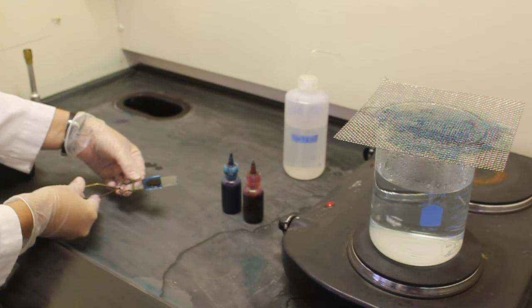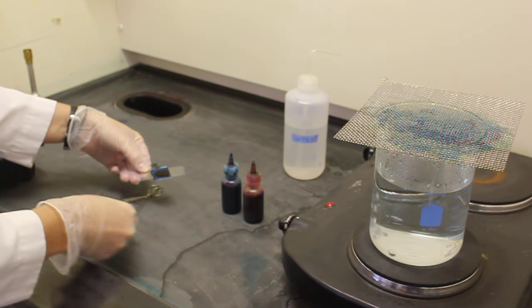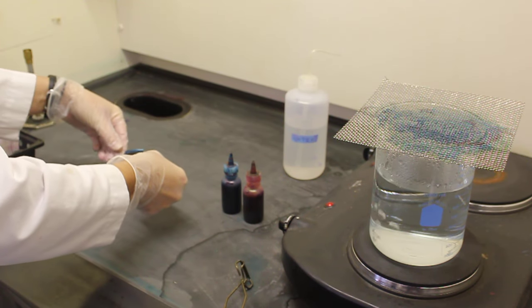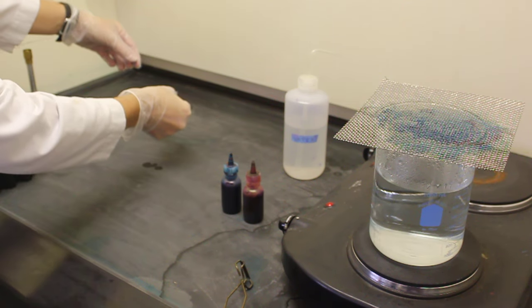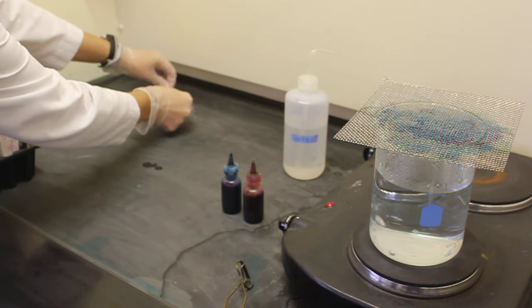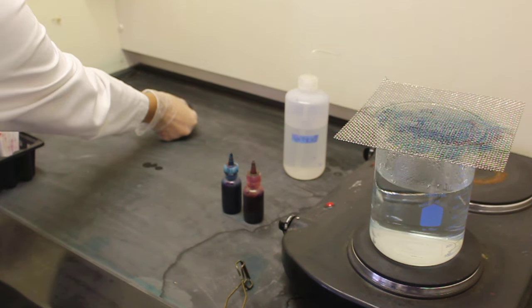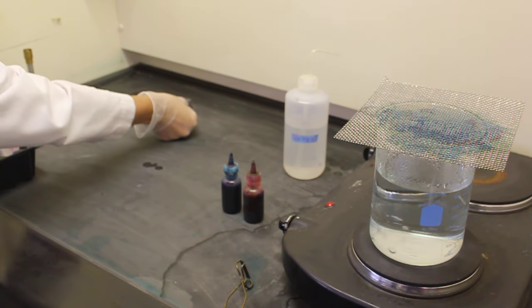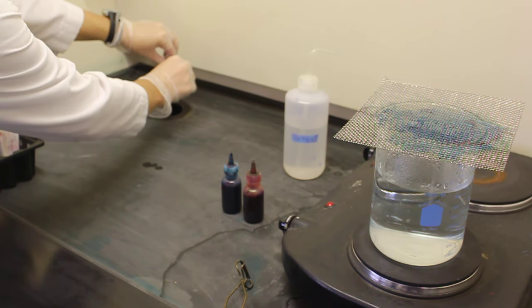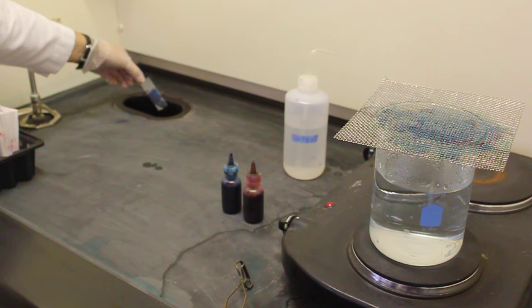Once your slide has cooled enough to touch, you then will remove your bibulous paper and throw it in the garbage bin, not down the sink. That is the end of step one of the endospore stain.